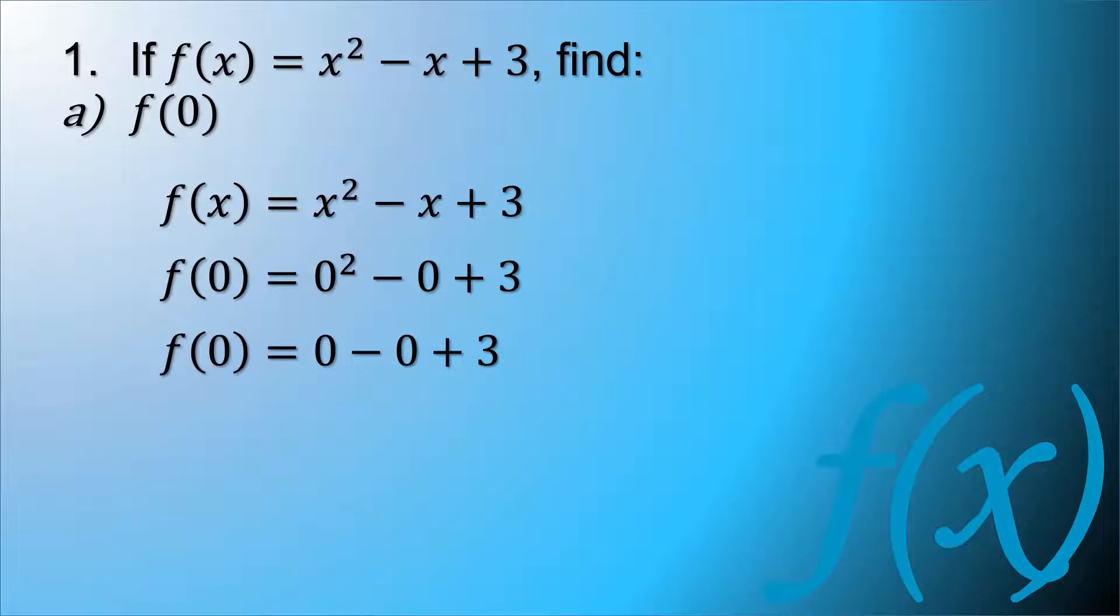So function of 0, we have to simplify this. 0 squared is equal to 0 minus 0 plus 3. So that results to function of 0 is equal to 3. So that is our first example.